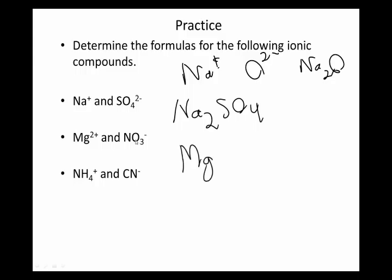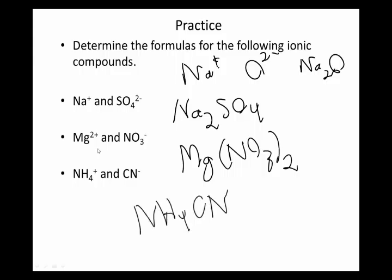Magnesium and nitrate come together to make Mg with a plus 2 charge. How many nitrates do I need to match magnesium? I need two of them to get a minus 2. NO3 with a 2. Ammonium cyanide is NH4CN.